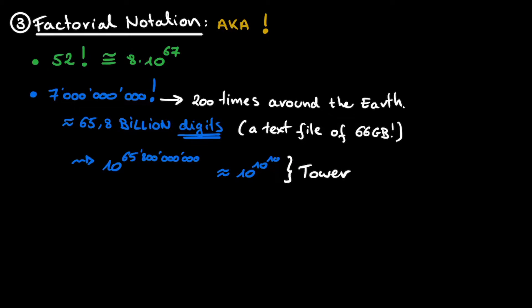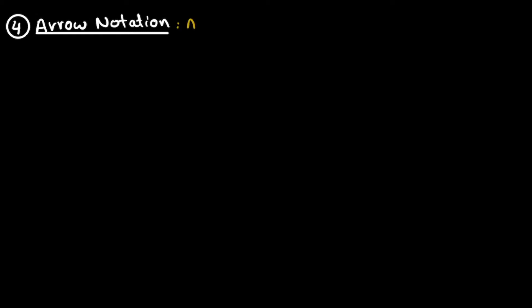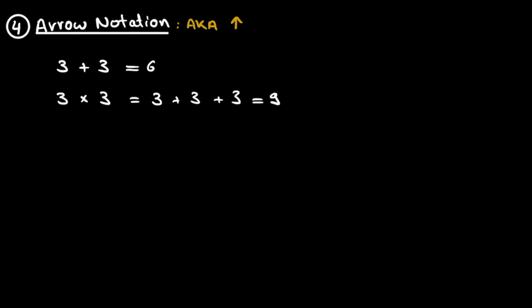And this brings us to the arrow notation, which most people don't know, but it is here where the big numbers are. To understand the pattern, we start very small. 3 plus 3 is 6 — no surprises. Going one step further, multiplication: 3 times 3 is simply 3 plus 3 plus 3 — three 3's with addition between them — which is 9. Now if we write 3 up arrow 3, following the pattern that will be 3 multiplied by 3 times 3, which is 3 to the power of 3, equal to 27.